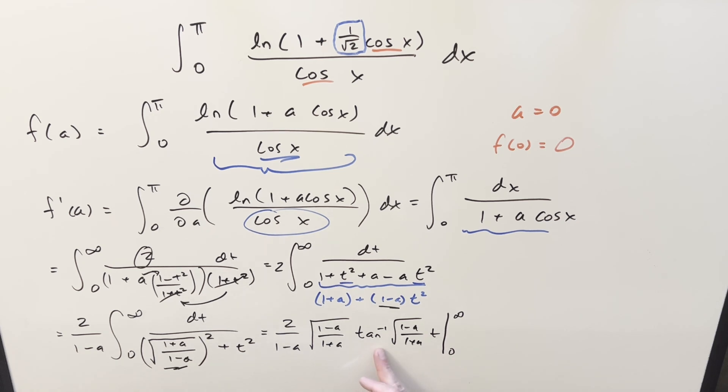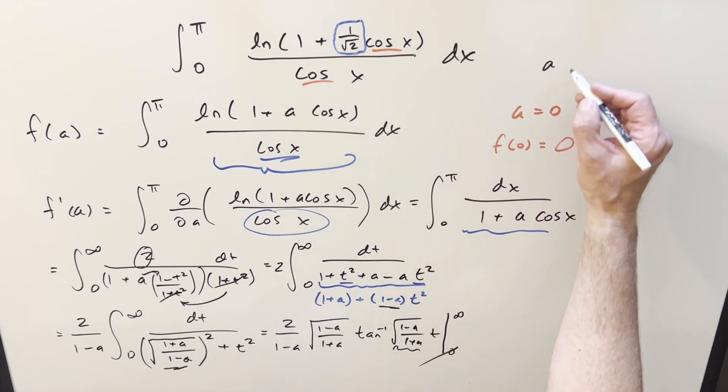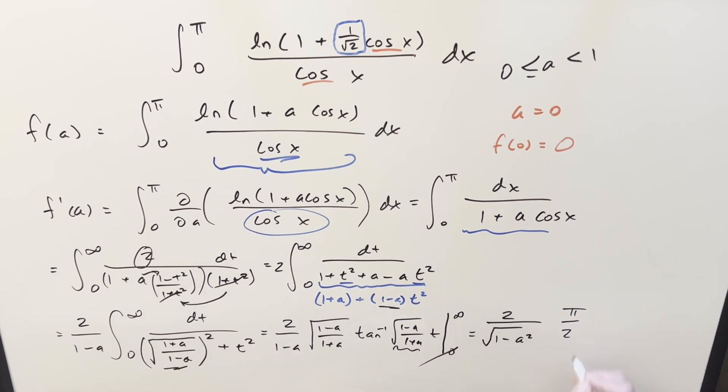But now arctan at zero is just zero, so don't worry about that. Plug in infinity. Arctan going to infinity is going to be pi over two. Notice there are some restrictions on this. I think for the a value, we know the a value is going to be one over square root of two, but I think for this to work, we need the a value to be between zero and less than one. So going ahead with this, I'm going to simplify this a little bit. Because we have one minus a and square root one minus a, I can bring it all into one radical and multiply these together and get this as one minus a squared. And then arctan going to infinity is going to be just pi over two. Cancel out the twos, and we've got our f prime a value. It's just going to be pi over square root one minus a squared.